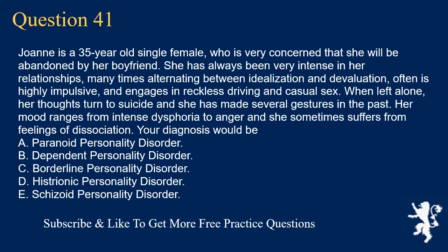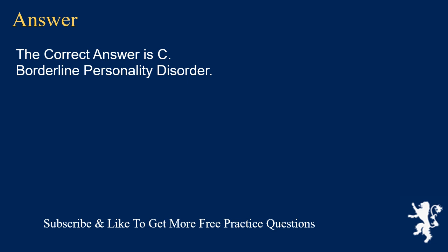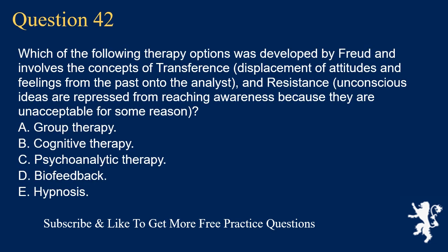Question 41. Joanne is a 35-year-old single female who is very concerned that she will be abandoned by her boyfriend. She has always been very intense in her relationships, many times alternating between idealization and devaluation, often is highly impulsive, and engages in reckless driving and casual sex. When left alone, her thoughts turn to suicide and she has made several gestures in the past. Her mood ranges from intense dysphoria to anger and she sometimes suffers from feelings of dissociation. Your diagnosis would be: A. Paranoid personality disorder. B. Dependent personality disorder. C. Borderline personality disorder. D. Histrionic personality disorder. E. Schizoid personality disorder. The correct answer is C. Borderline personality disorder.